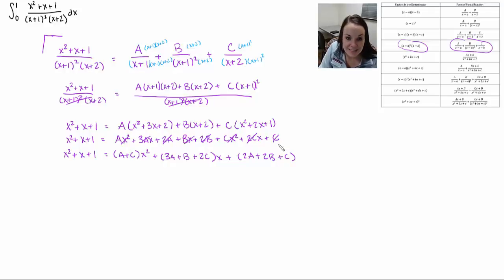Alright. So now we can set up a system of equations. So I go ahead and I compare my x terms. Well the coefficient here is 1. So I can set 1 equal to a plus c. My coefficient on the x term is also 1. So I can set 1 equal to 3a plus b plus 2c. And then my number term was also a 1. So I can set the 2a plus 2b plus c also equal to 1.